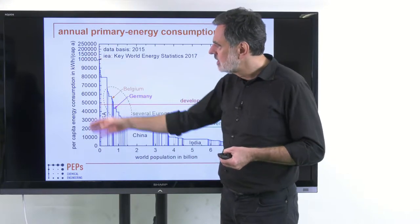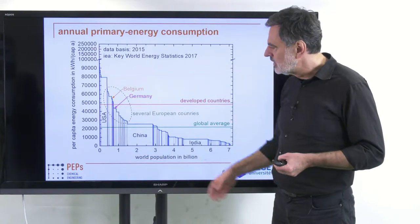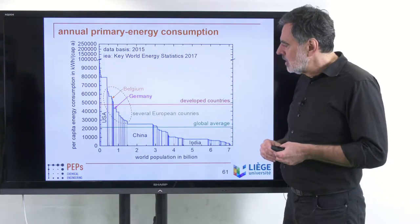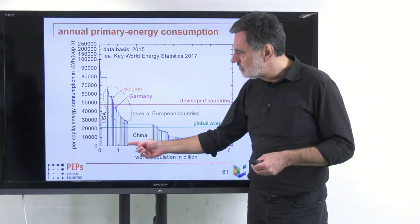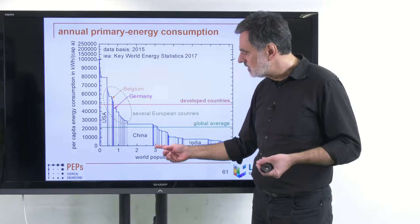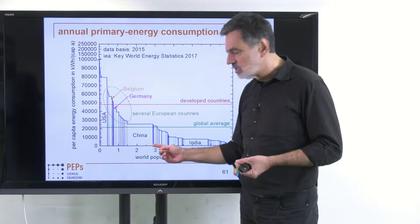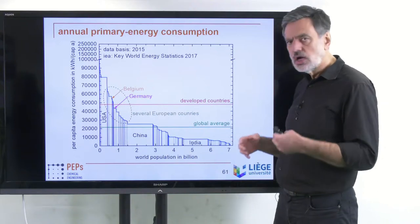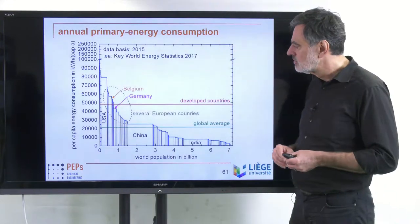This shows primary energy consumption in kilowatt-hours per capita per year for different countries plotted versus their world population, sorted by per capita consumption. Vertically we have per capita consumption and horizontally the number of people; multiplying the two gives the overall consumption, so the area of each rectangle corresponds directly to the overall consumption in that country. Two countries are so large you can directly see them: India, China, and the United States have significant global contributions.